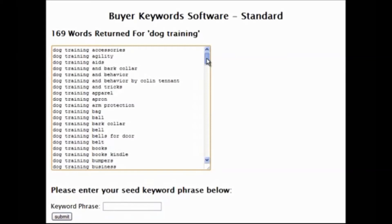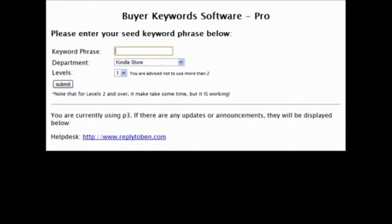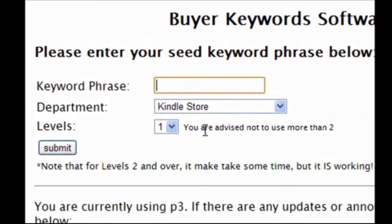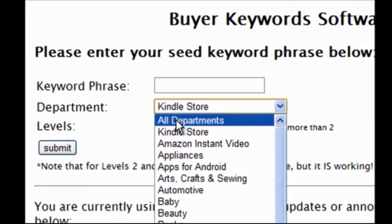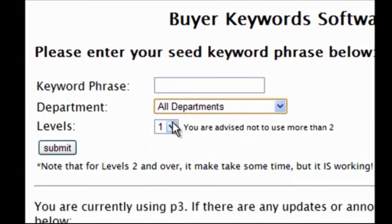This is great if you're trying to put any content on the internet, sell anything with AdWords, or for really any reason. If you're selling on Amazon — especially for Kindle — this is absolutely incredible. There are two versions: the standard version, which goes to all departments by default, and the pro version, which has a few more options where the real power is multiplied. With the pro version you can choose which department — whether that's all departments, the Kindle store, books, electronics, or any department within Amazon.